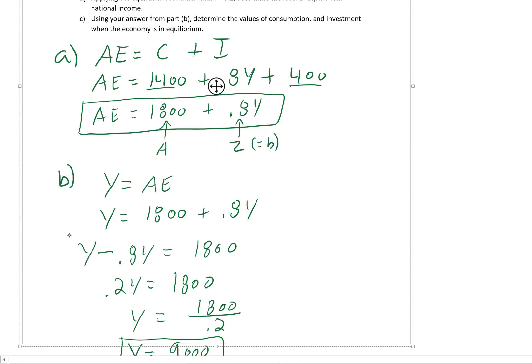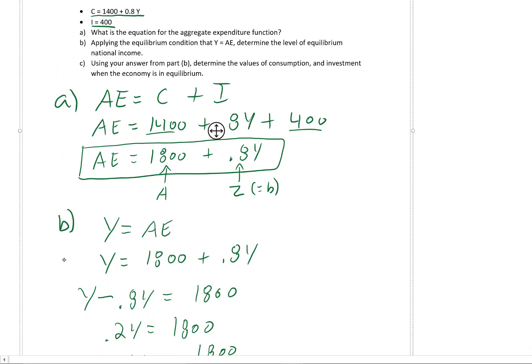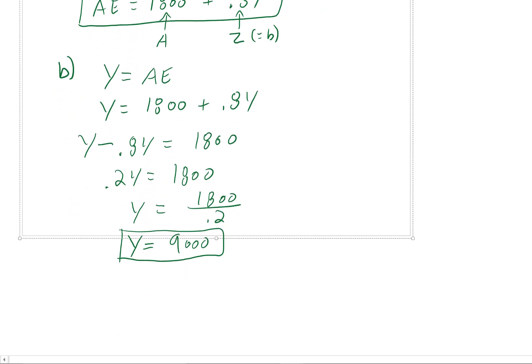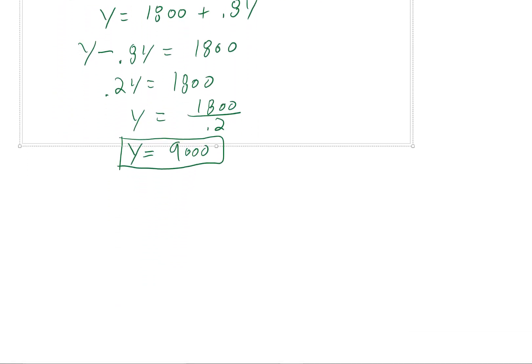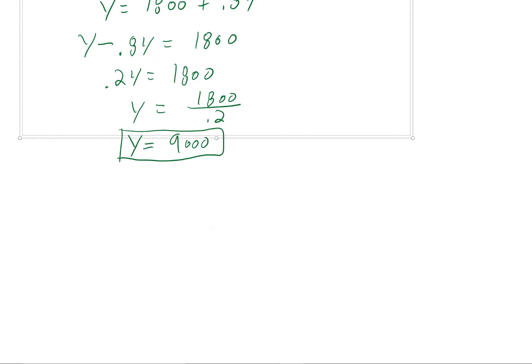And we can use our calculator to figure out that 1800 over 0.2 is equal to 9,000. So I think we've answered part B, which just determines the level of equilibrium of national income. And we found that equals to 9,000. Before we move on, I just want to quickly graph this so we can see it visually as well.